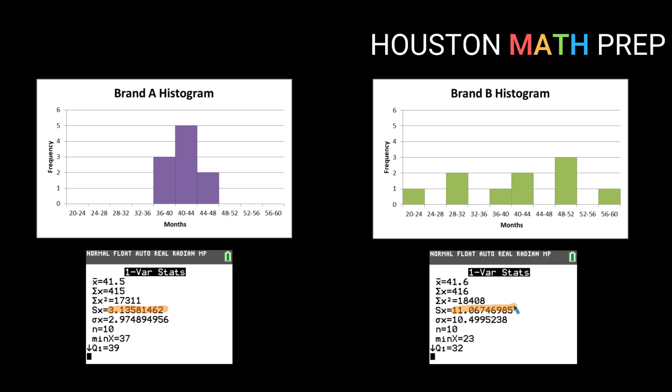So in general if I'm looking to paint my house I would probably go with brand A because not only does it have a mean life that is above the claim by the company but it seems to be the more consistent brand.